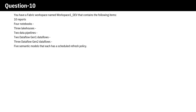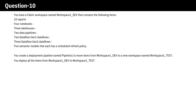10 reports, 4 notebooks, 3 lakehouses, 2 data pipelines, 2 Dataflow Gen1 data flows, 3 Dataflow Gen2 data flows, and 5 semantic models that each has a scheduled refresh policy. You create a deployment pipeline named Pipeline 1 to move items from Workspace 1 Dev to a new workspace named Workspace 1 Test.